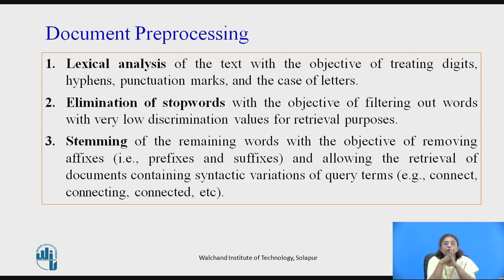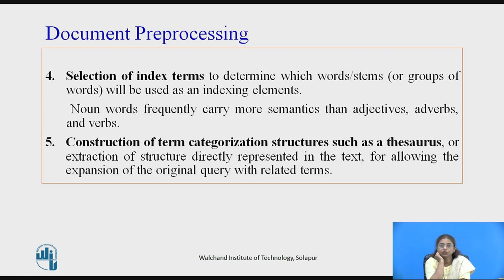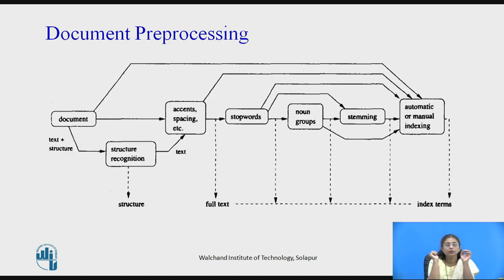Stemming means the remaining words after removing affixes are taken as index terms. Then there is the selection of index terms — noun words frequently carry more semantics than adjectives, adverbs, verbs, articles, and prepositions. Finally, there is the construction of the thesaurus. This is how the logical view is created and the set of index terms is generated.